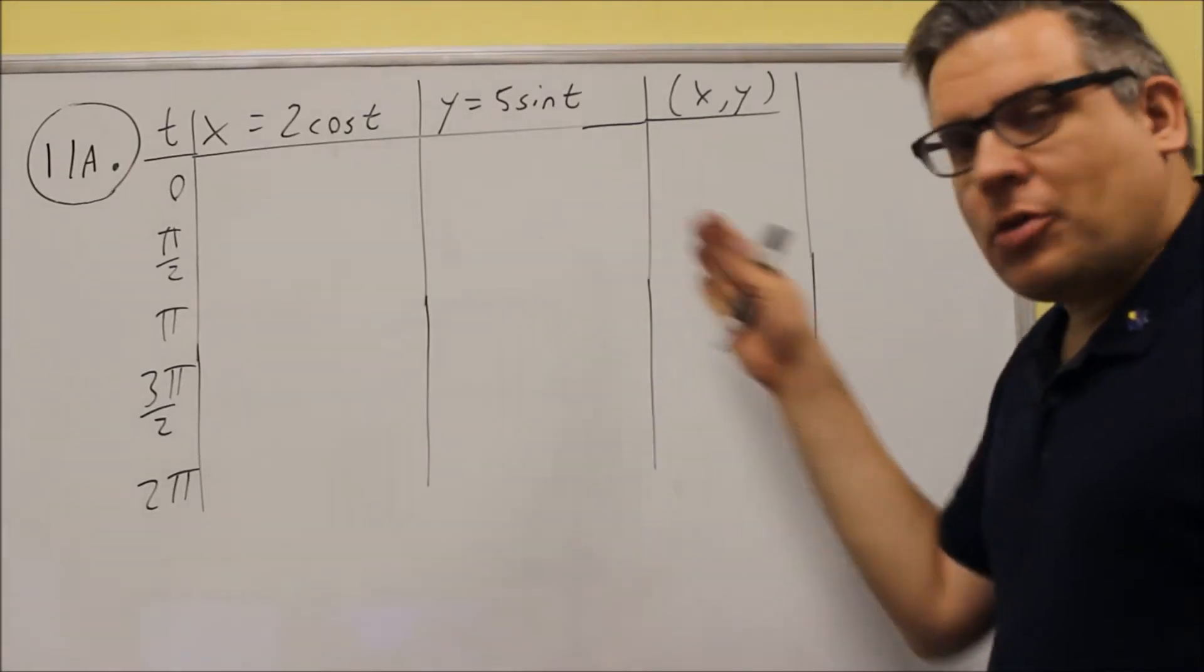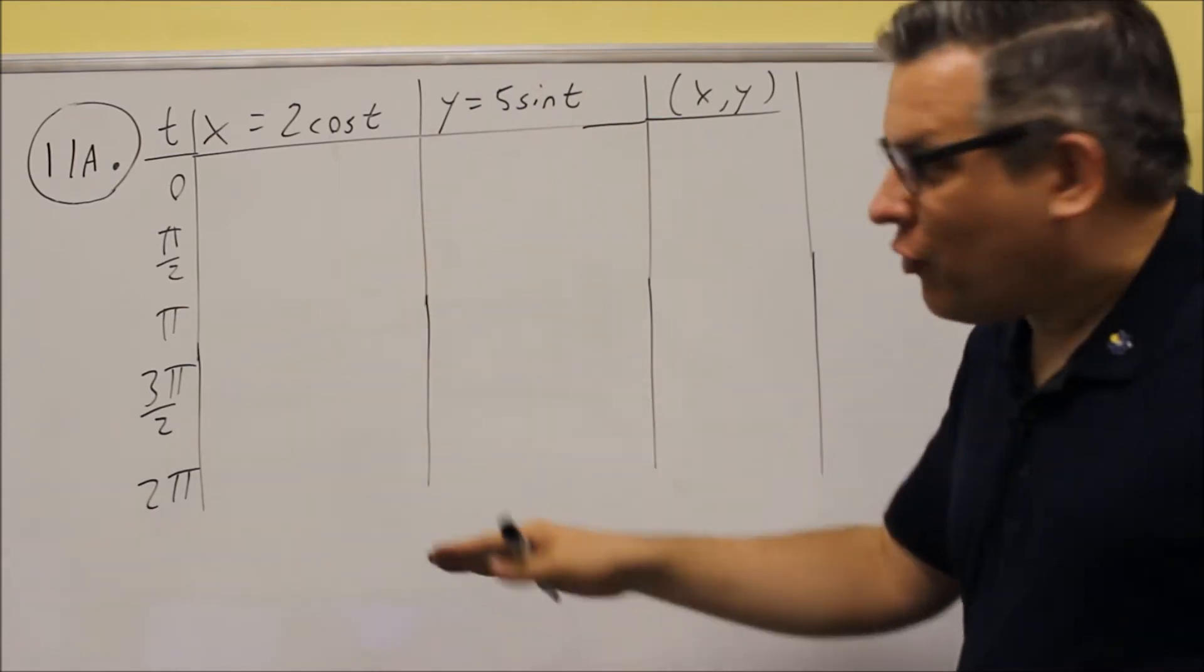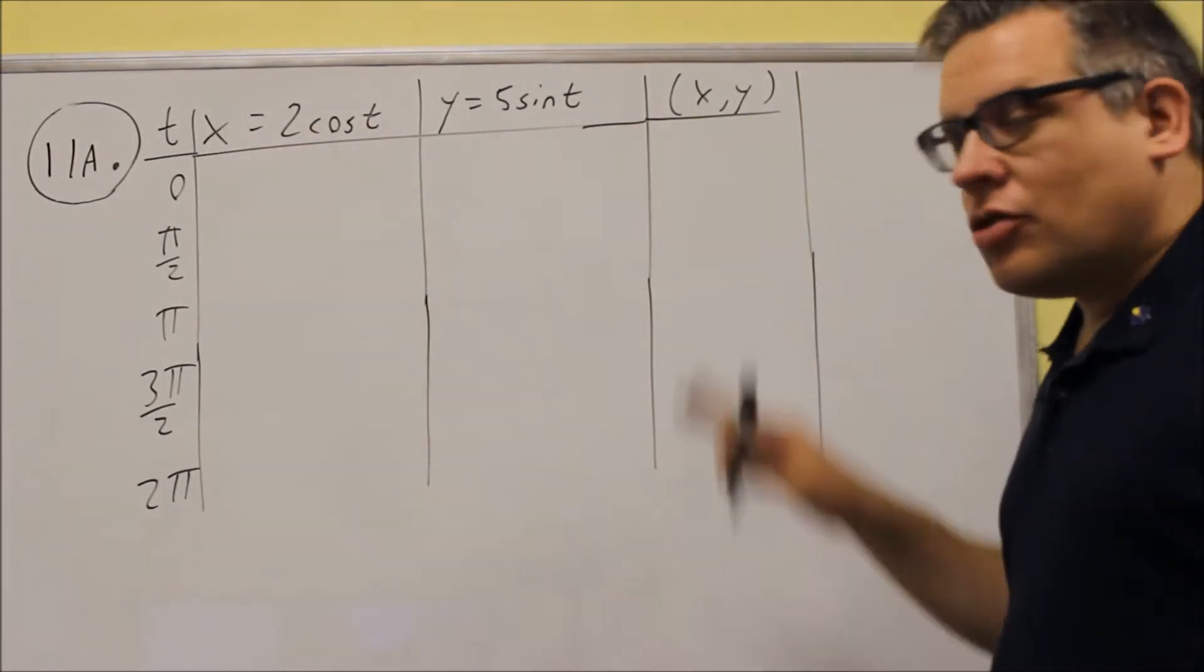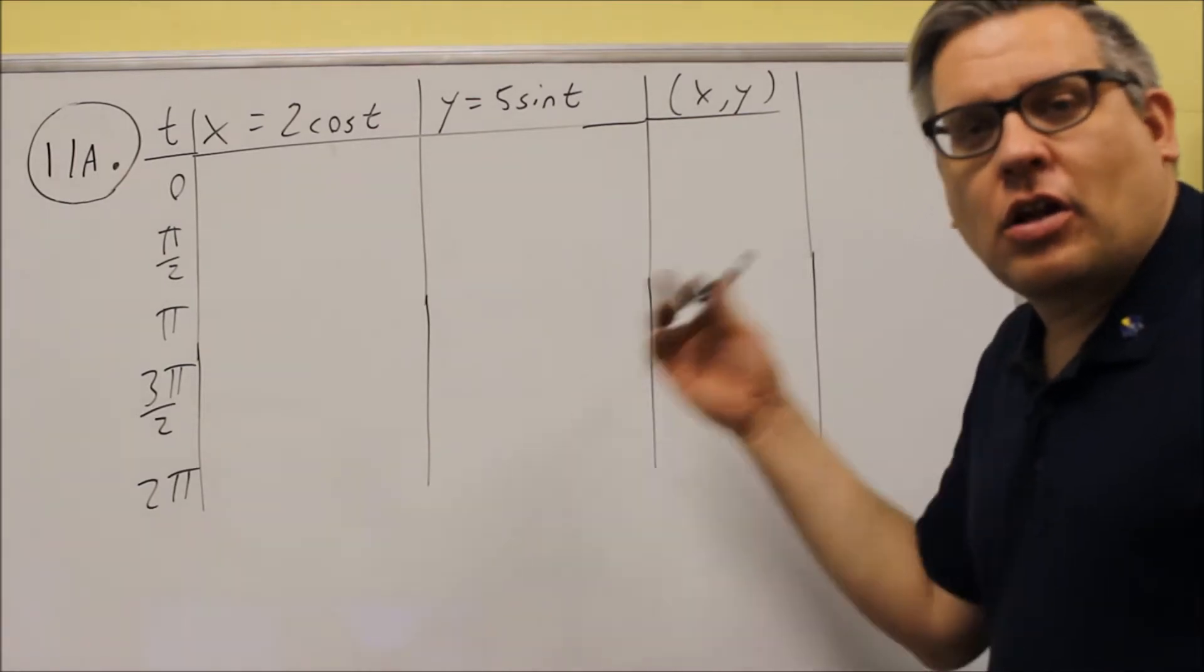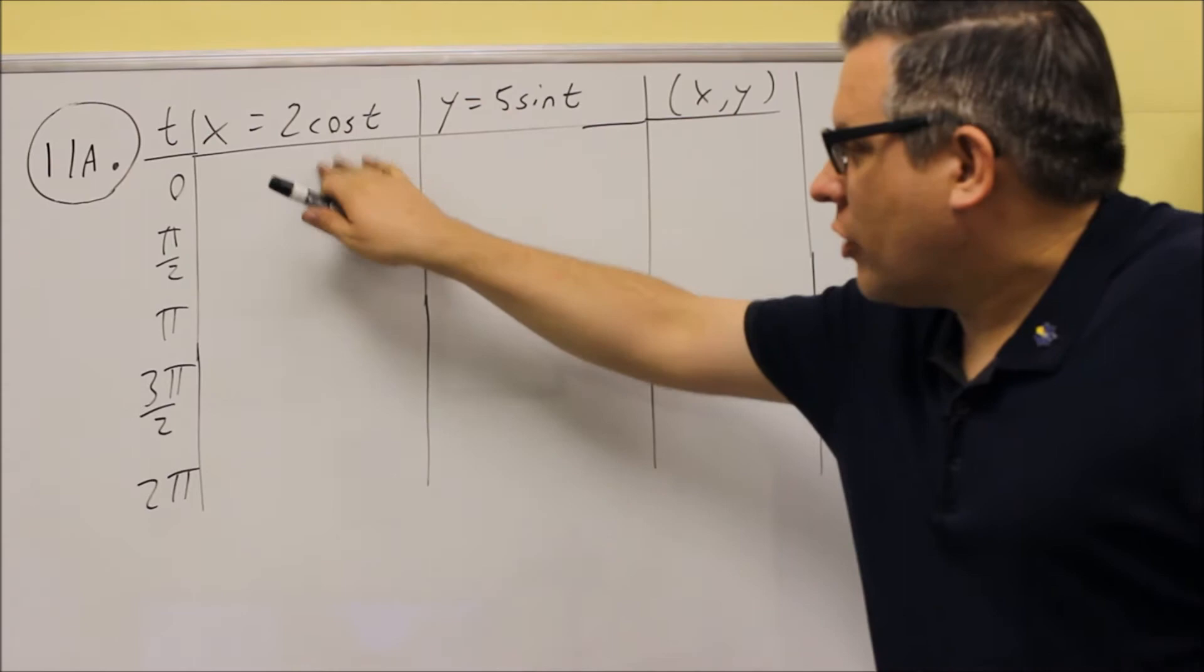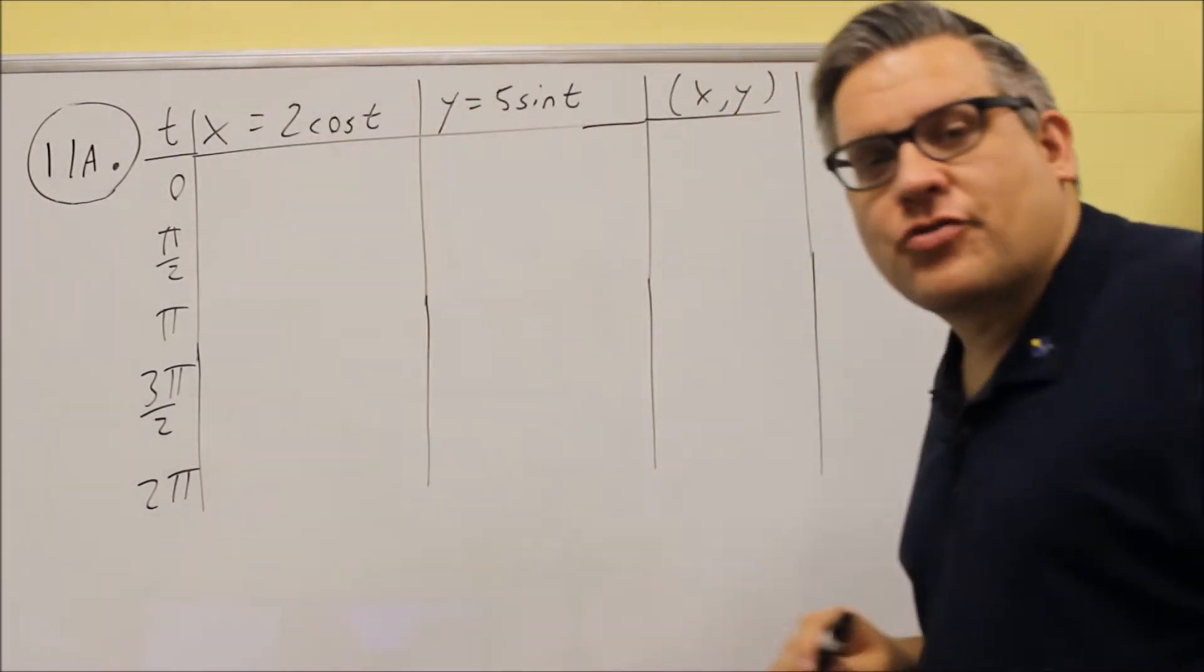Number 11, we'll be talking about parametric equations. There will be a table provided for you so you know exactly what values to plug in for t. Once you do that, you're going to graph it and then eliminate the parameter. So let's first start by filling in the graphs. Again, this is all going to be provided for you, the equations and the values for t.